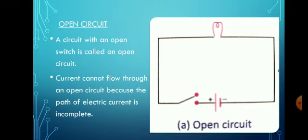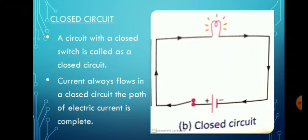Next, we should know about the open circuit. A circuit with an open switch is called an open circuit. The current cannot flow because the path of electric current is incomplete — the red dots are not joined, resulting in an incomplete path. In a closed circuit, a circuit with a closed switch, the two red dots are joined together, completing the entire path. So current always flows in a closed circuit because the path is complete.